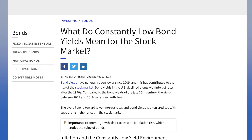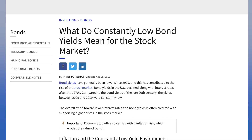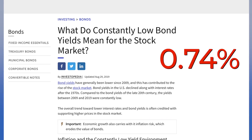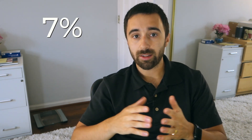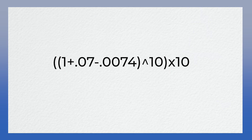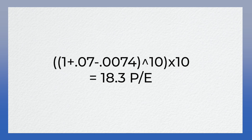Right now interest rates are so low that it doesn't matter very much. The current yield for a 10-year treasury bond is only 0.74%. So let's say I have a company I expect to grow at 7%. The formula would look like this: (1 + 0.07 − 0.0074) to the 10th power times 10, which equals a fair PE value of 18.3.